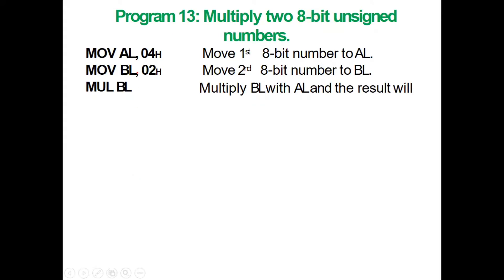Next, multiplication. We can multiply two 8-bit numbers. We move values into the AL register and the BL register. The MUL instruction is used where the second operand is specified and the first operand defaults to AL. For 8-bit multiplication, AL is the default first operand. AL multiplied by BL is performed and the answer is stored in the AL register.